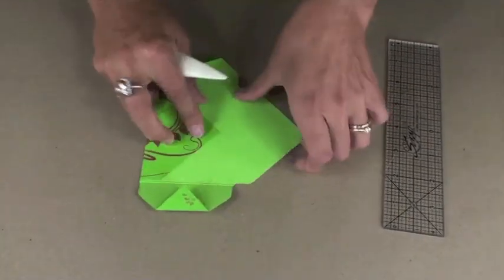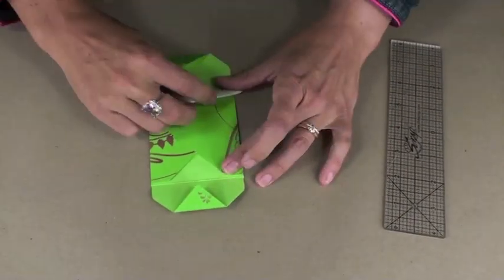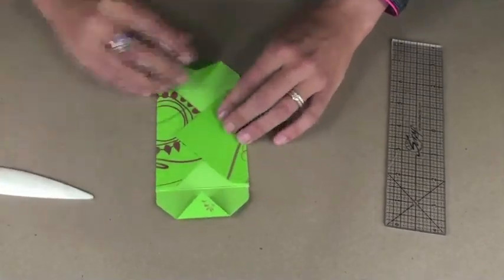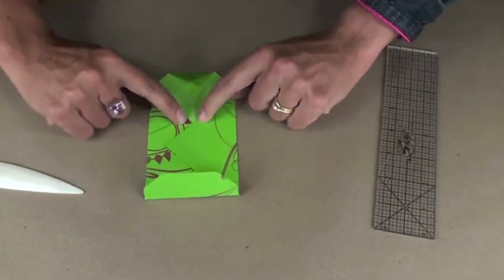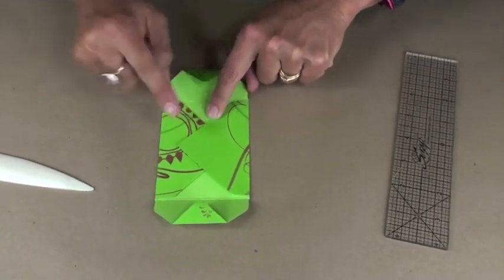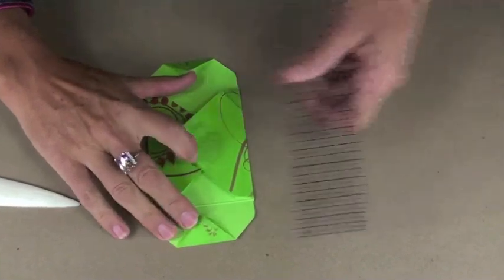Then take that long flap, fold it in, and score along or burnish along the score line. Notice that there is an excess flap there that we need to deal with. Let's just see where those flaps intersect, right in the middle where that V is formed.